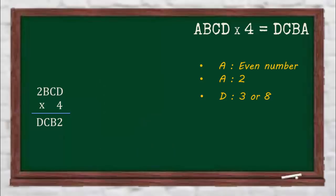When 4 is multiplied by 2, the thousands place of the output should be 8, or in the case of a carried-over number, it could be 9. Based on these two conclusions, we can finally mark the value of D as 8.